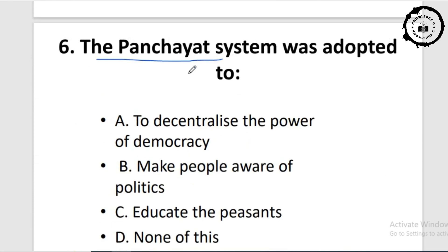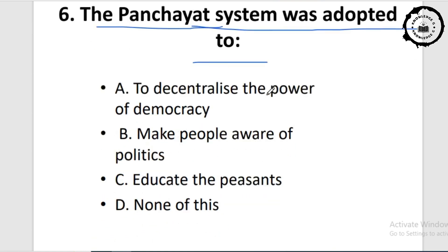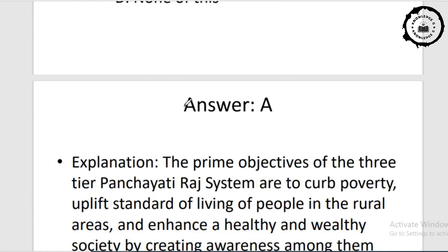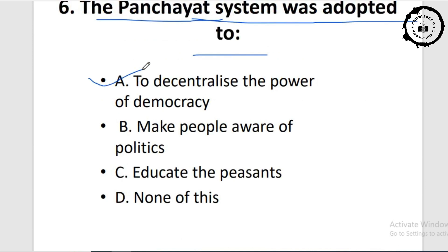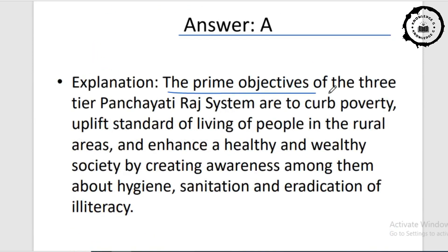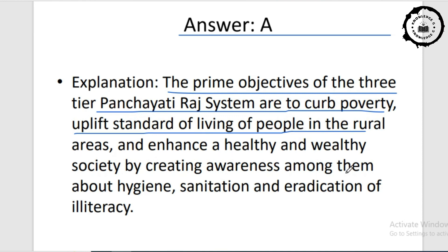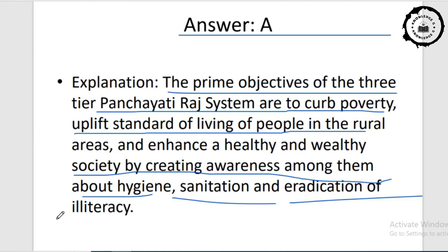Question six: the Panchayat system was adopted to — Option A: decentralize the power of democracy. The correct answer is option A. The prime objectives of the three-tier Panchayati Raj system are to curb poverty, uplift the standard of living of people in rural areas, and enhance a healthy and wealthy society by creating awareness among them about hygiene, sanitation, and eradication of illiteracy.